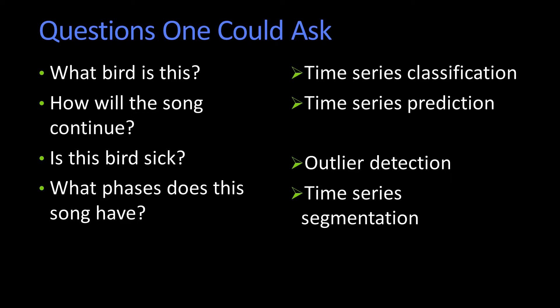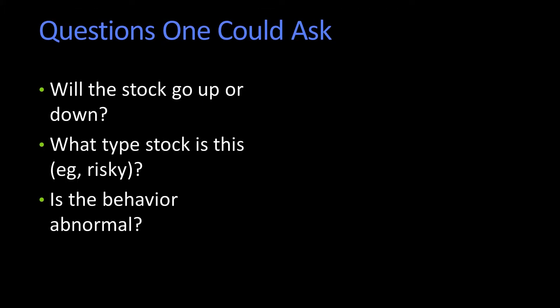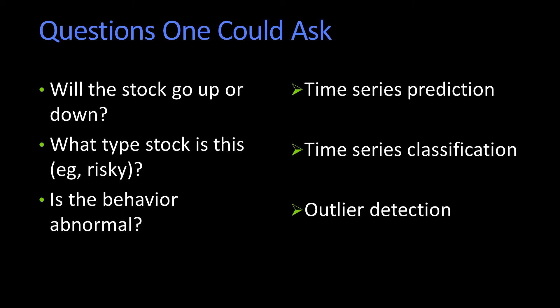That would be for bird data. How about other time series data? Here's stock data of different indices over different amounts of time. You might ask: will this stock go up or down? What type of stock is this, if you had categories of stocks? Is this stock behaving the way it normally does? That becomes, just like before: prediction, classification, or outlier detection.